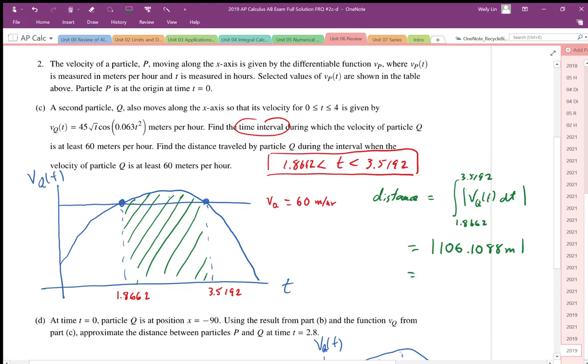So this area in here represents 106.1088 meters, and since it is positive, we're going to leave that as 106.1088 meters. So the distance traveled is that.